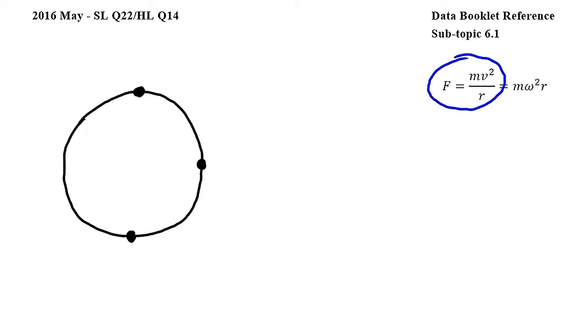By looking at this equation from subtopic 6.1, where F is the centripetal force in circular motion, M is the mass, V is speed, and R is the radius of the circle,